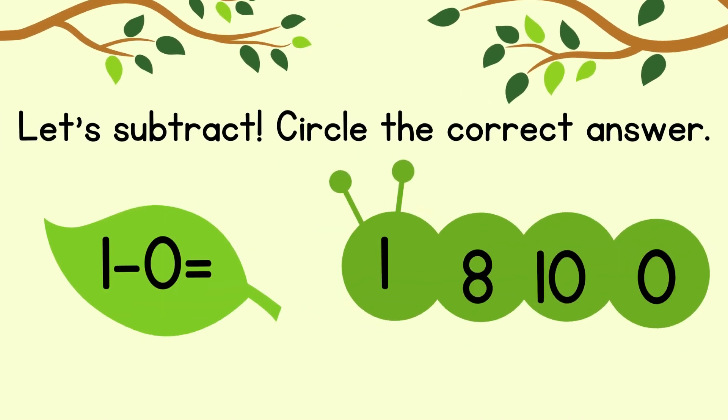Circle the correct answer. 1 minus 0 equals. The correct answer is 1.